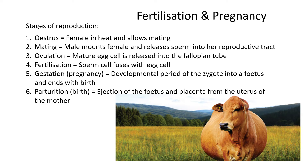Thirdly, after mating, is ovulation — because she goes into heat before ovulation actually happens. Ovulation is when a mature egg cell is released into the fallopian tube. At this stage, mating would have already happened, so the sperm cell will be there ready to meet the egg cell when it's released into the fallopian tube.